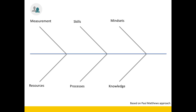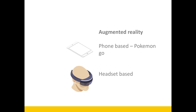It doesn't have to be complicated — it just has to be a moment where you sit there and start talking to someone who might have come in with what they think is a training problem, and say: 'Can I just draw a diagram on the whiteboard and look at all these aspects of this particular problem?' What I particularly like about this is it still includes aspects around skills, knowledge, and mindsets — the traditional learning side — but it's also looking at processes, resources, and measurements.